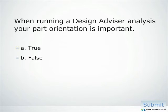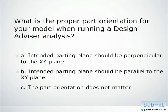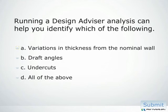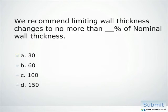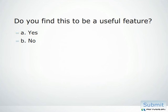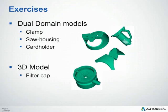When running a design advisor analysis, your part orientation is important — true or false. What is the proper part orientation for your model when running a design advisor analysis? Running a design advisor analysis can help you identify which of the following. As a general rule of thumb, we recommend limiting wall thickness changes to no more than what percent of the nominal wall thickness. Please feel free to practice your skills on some of the exercises that we've supplied. Additional information on where to access these should be covered in the introduction video.